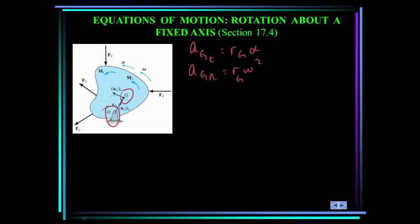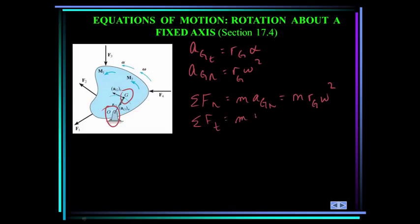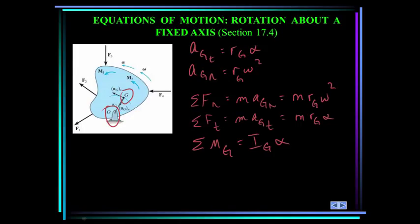We can write the scalar equations of motion as: summation of forces in the normal direction equals mass times acceleration of the mass center in the normal direction, which is M * R_G * omega squared. Summation of forces in the tangential direction equals M * R_G * alpha. And summation of moments about the mass center equals I_G * alpha, the angular acceleration.